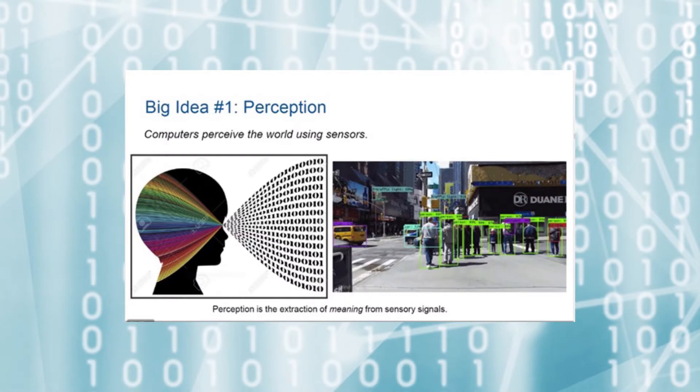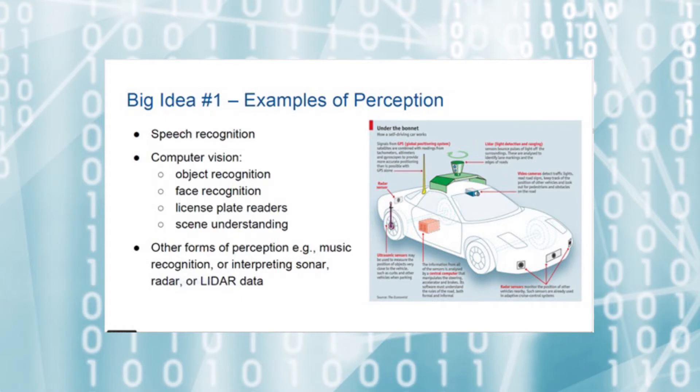The first big idea is perception. Computers perceive the world using sensors. Perception is the extraction of meaning from sensory signals. A microphone records sound, but that's just sensing. Extracting the speech, the meaning from the sound, that's perception. Speech recognition is an example of computer perception. When you talk to your phone to an assistant like Siri or Alexa, you are using speech recognition software.